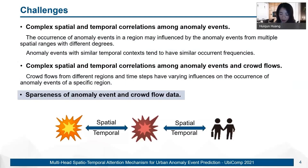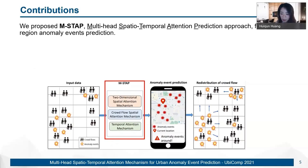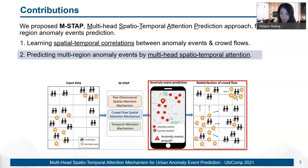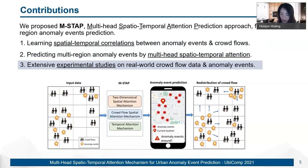To overcome the above challenges, we propose AMSA for multi-region anomaly events prediction. It captures the spatial-temporal relations between anomaly events and crowd flows and predicts multi-region anomaly events by the novel multi-head spatial temporal attention. To verify the effectiveness of AMSA, we conduct extensive experimental studies on real-world crowd flow data and anomaly events data and achieve high accuracy in prediction of anomaly events distributions.